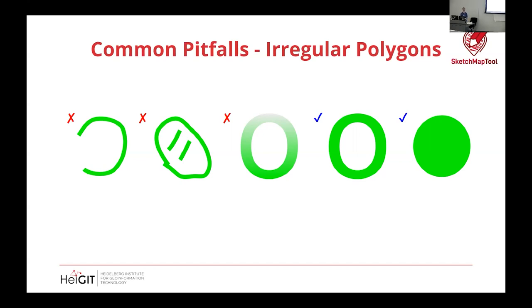Another thing to pay attention to is how you're drawing your polygons. If you have an open shape like a reverse C — that's fine for mapping a road or river — but if your purpose is to map a circle, you need to complete that polygon, because the vector output will reflect exactly what you drew. Similarly, if you fill in a shape with interior lines, it will read as a circle plus two separate lines. The two examples on the far right are what you're aiming for: a simple outline or a fully filled-in shape.